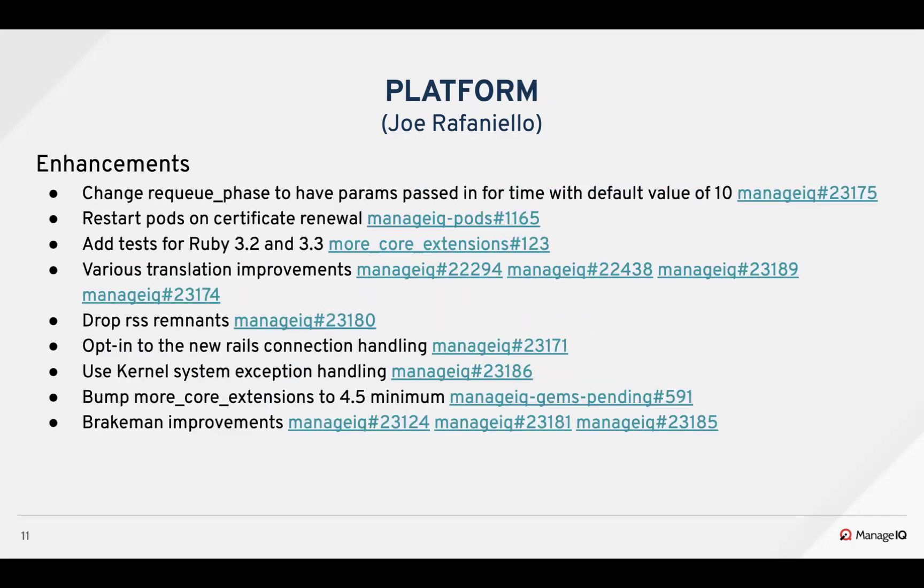I also removed some remaining deprecated RSS code and models, product features, alerts, and dashboards. Adam verified we're not using the old Rails connection handling, so we can opt into the new Rails connection handling to avoid a noisy warning. While looking at the translations, I also found an optimization to avoid writing our own error handling — I did that with kernel system. Jason bumped more core extensions to the minimum 4.5, and he also added several Brakeman improvements: upgraded Brakeman to version 5, configured it to use Prism, and ignored the product progress indicator that was very noisy on CI.